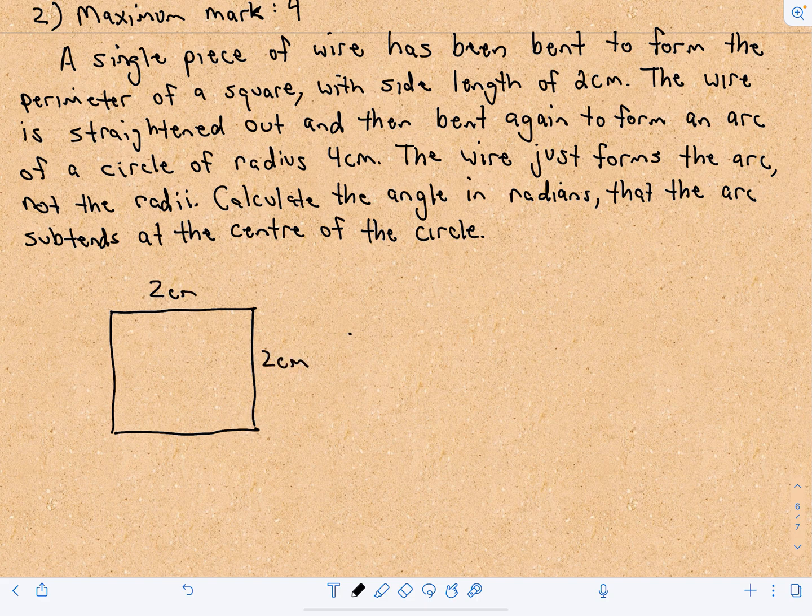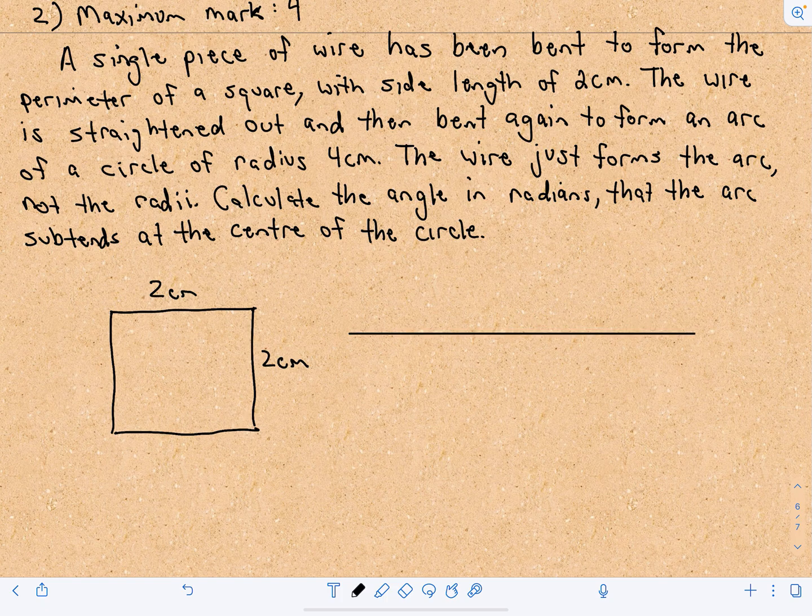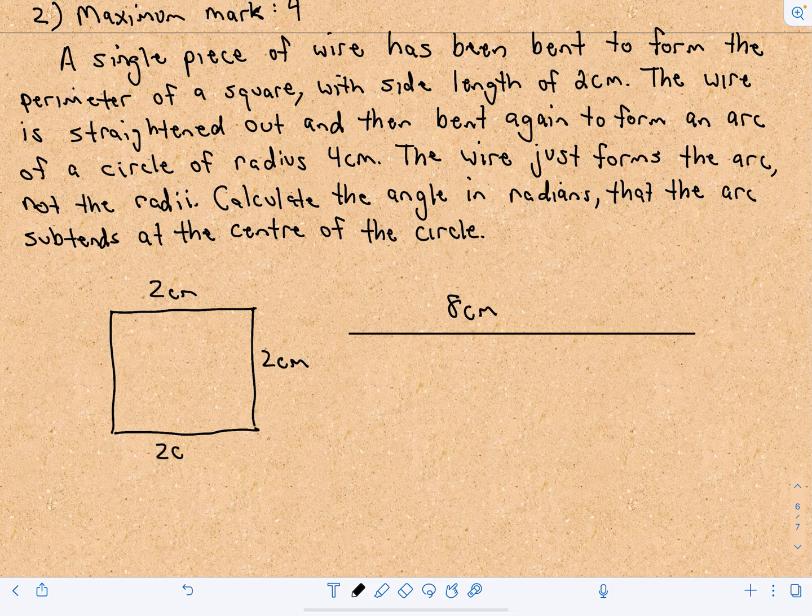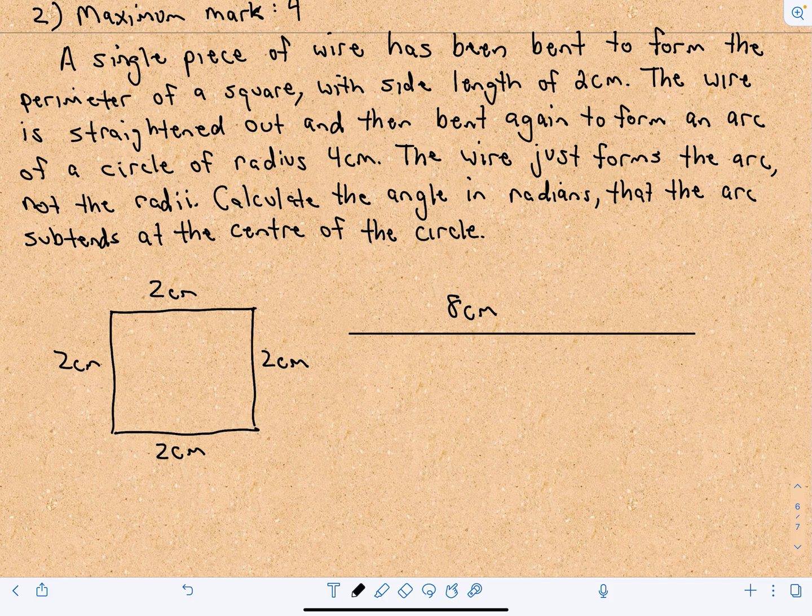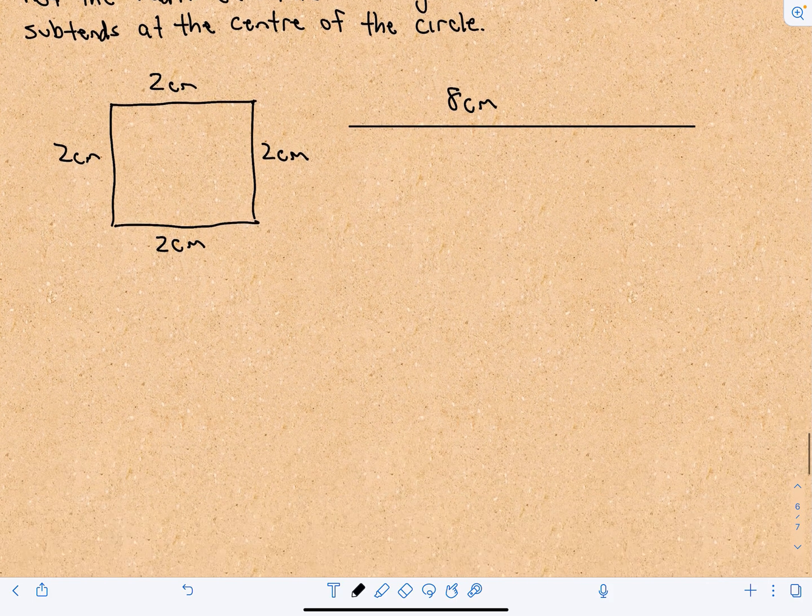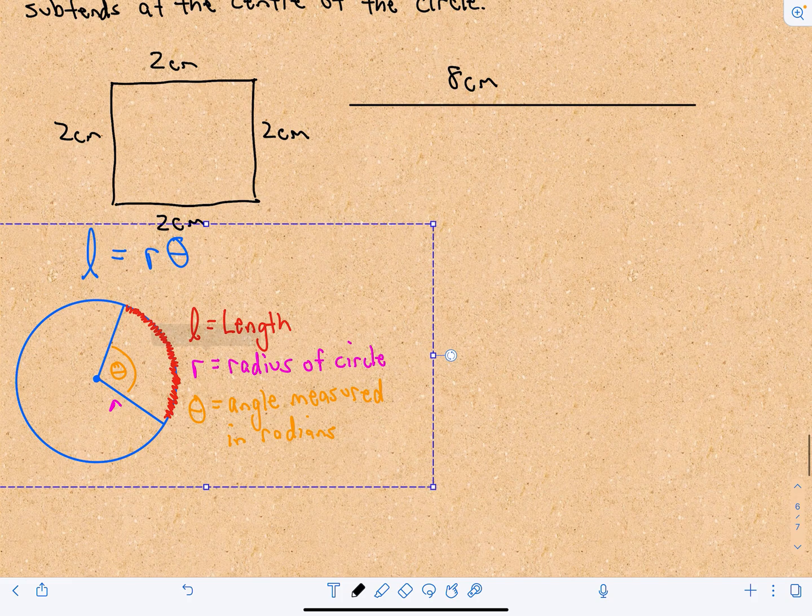So eventually we're gonna have a wire that's eight centimeters long, if we add all of those up: two centimeters plus two centimeters plus two centimeters plus two centimeters. So we've got this wire that's eight centimeters long.